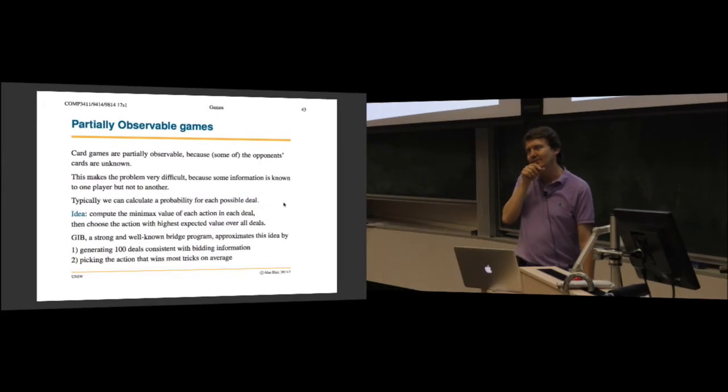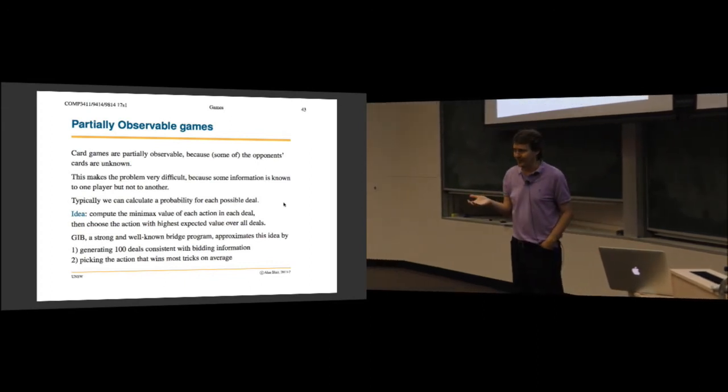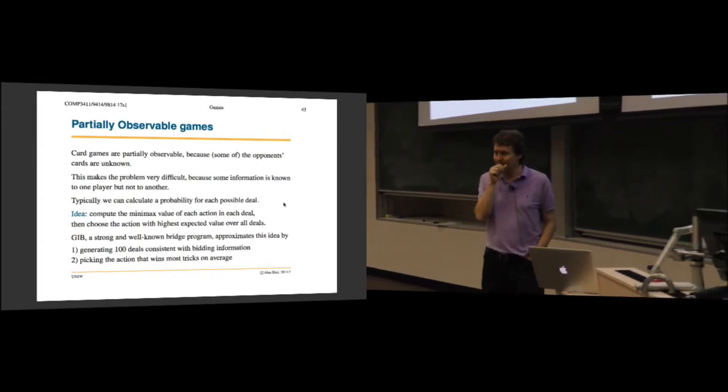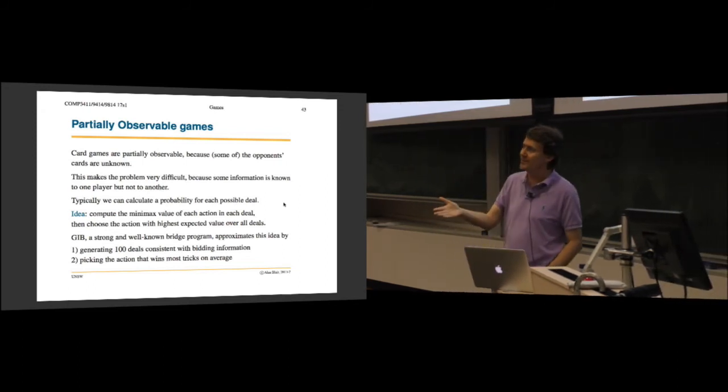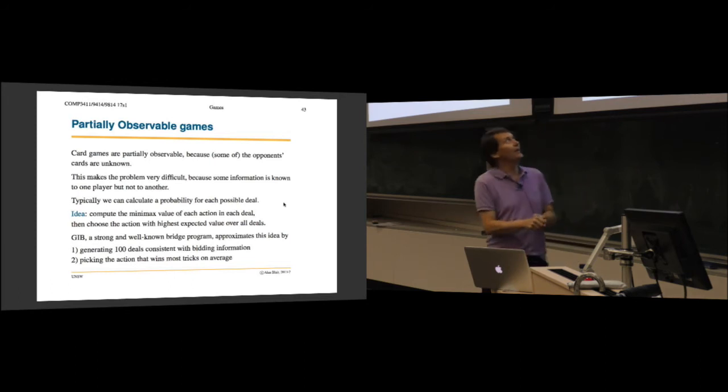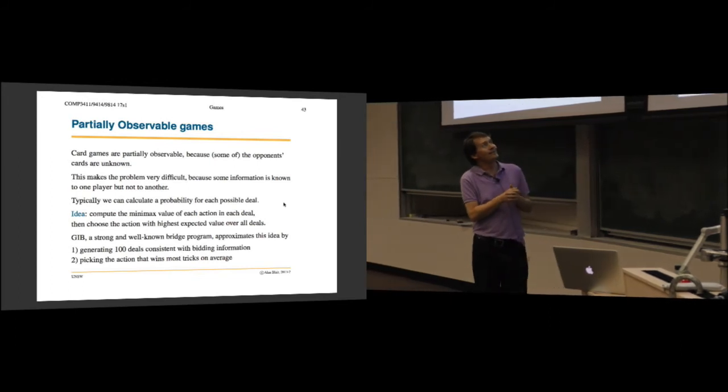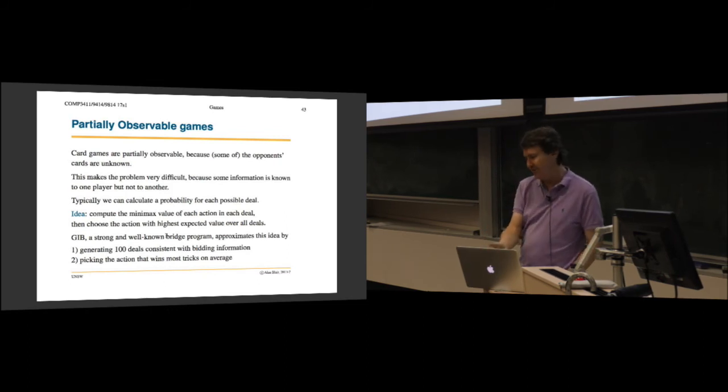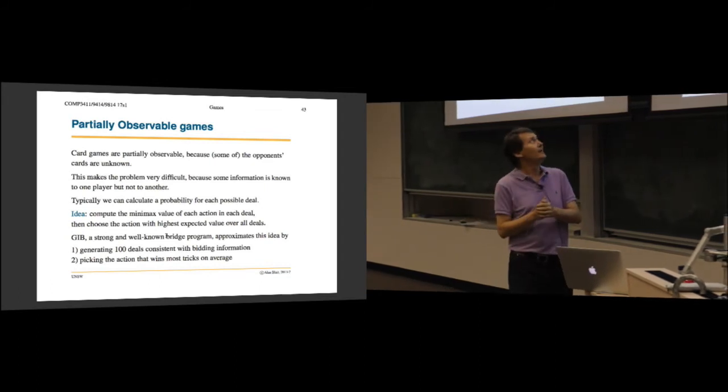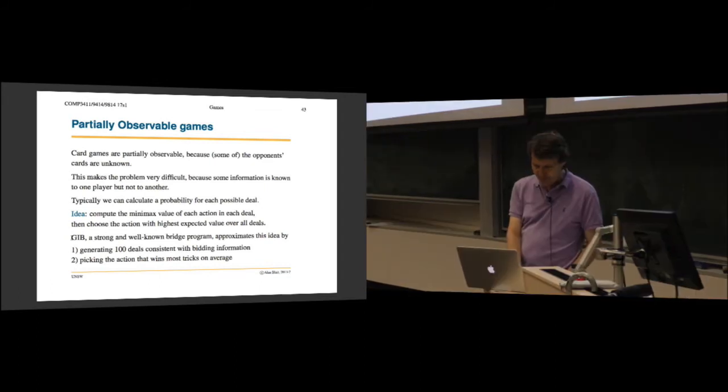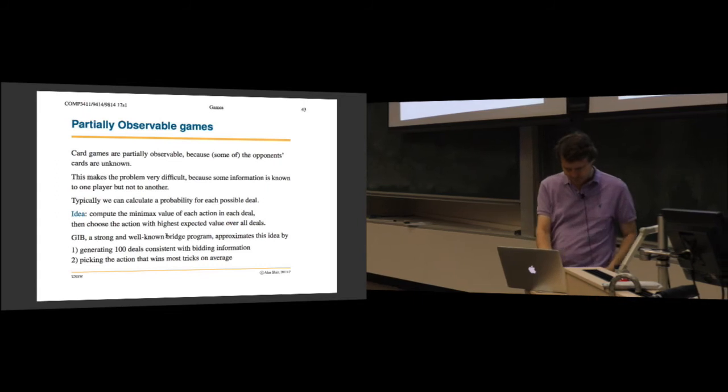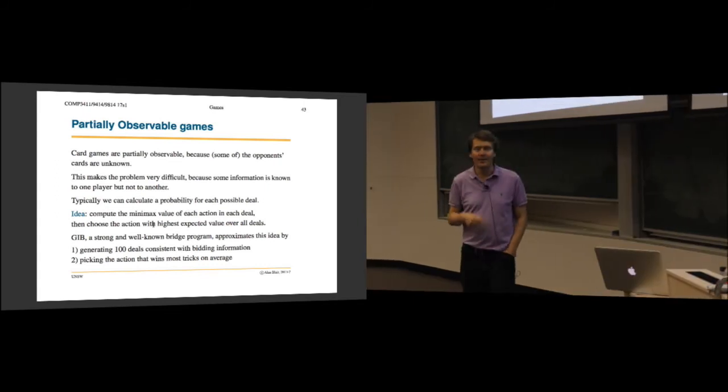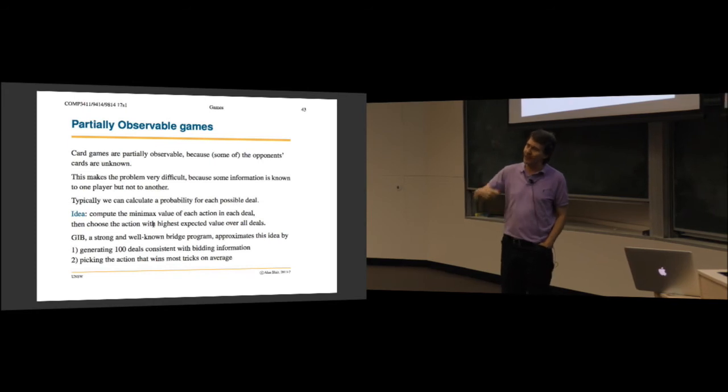We'll come back to this again when we talk about neural networks and so on. But it's just something to keep in mind. Now then we get to partially observable games. So if you remember, in the second week I was talking about the difference between card games and dice games. So dice games, once the dice have been rolled, everyone can see what they are. But card games, I have cards that you can't see and vice versa. So we actually need a different kind of strategy for card games. Bridge is a game that's similar to poker. People hold cards in their hand and then play them out.